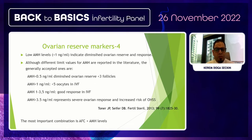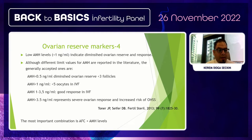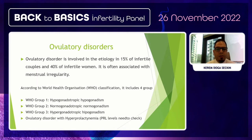AMH levels under 1 ng/mL indicate diminished ovarian reserve and poor response. AMH levels of 1–3.5 ng/mL suggest good response in IVF. The most important combination is antral follicle count together with AMH levels — neither alone is sufficient.